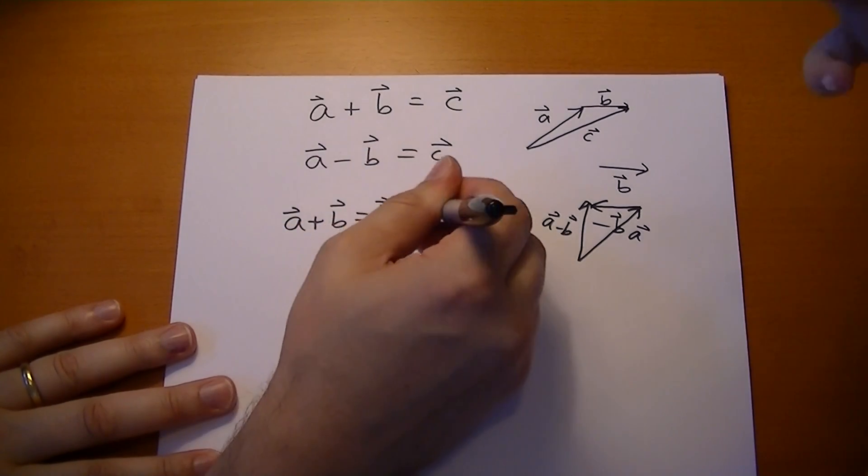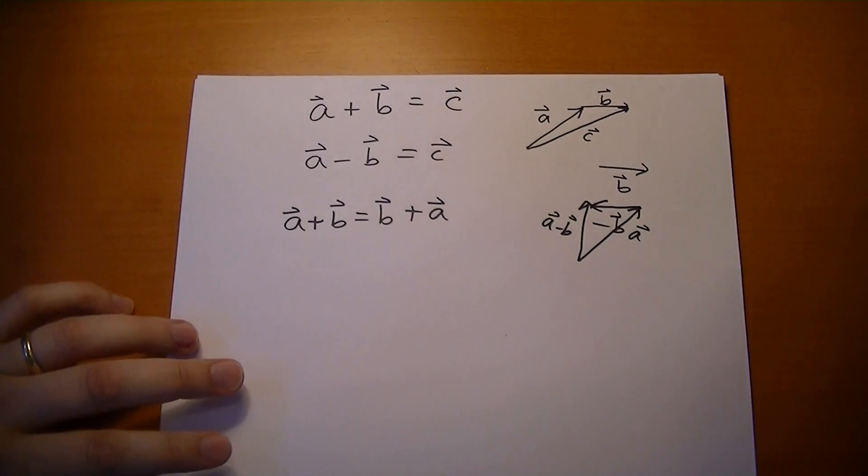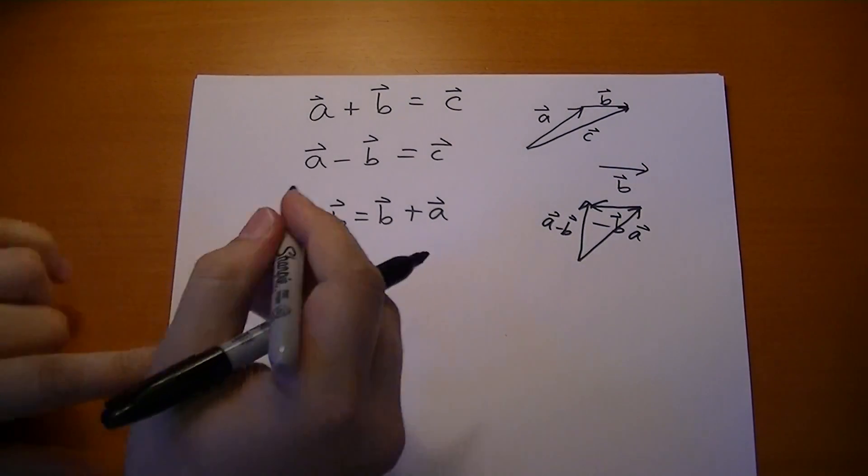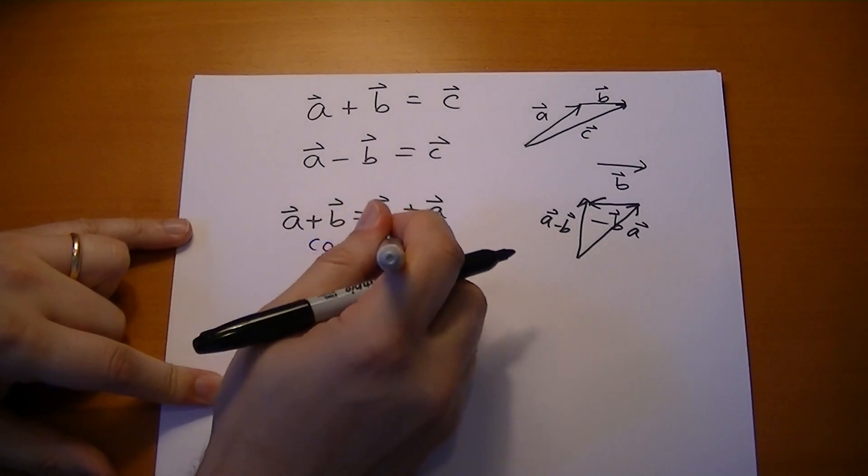We can switch the order around. It doesn't matter. That's not true for everything. We're going to get to cross products, and they are not commutative.